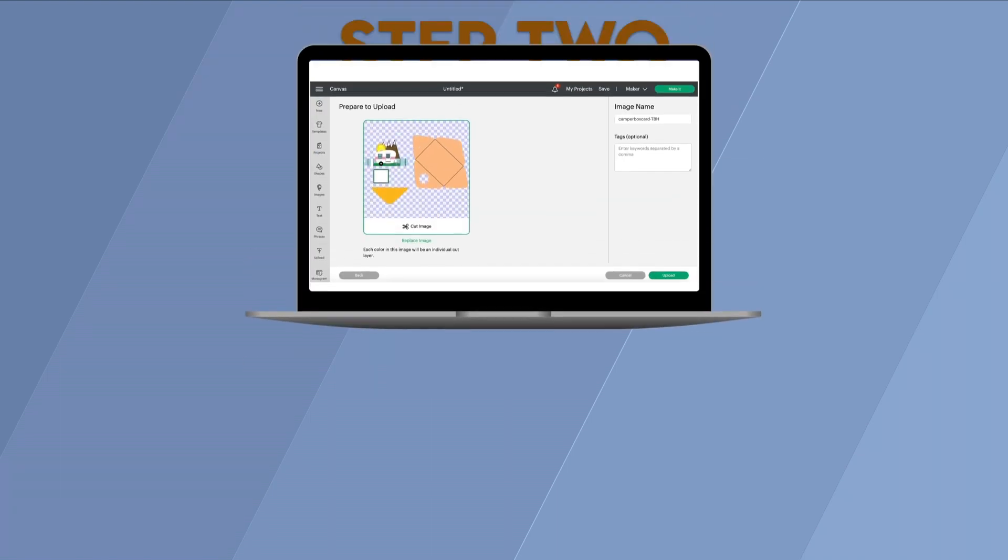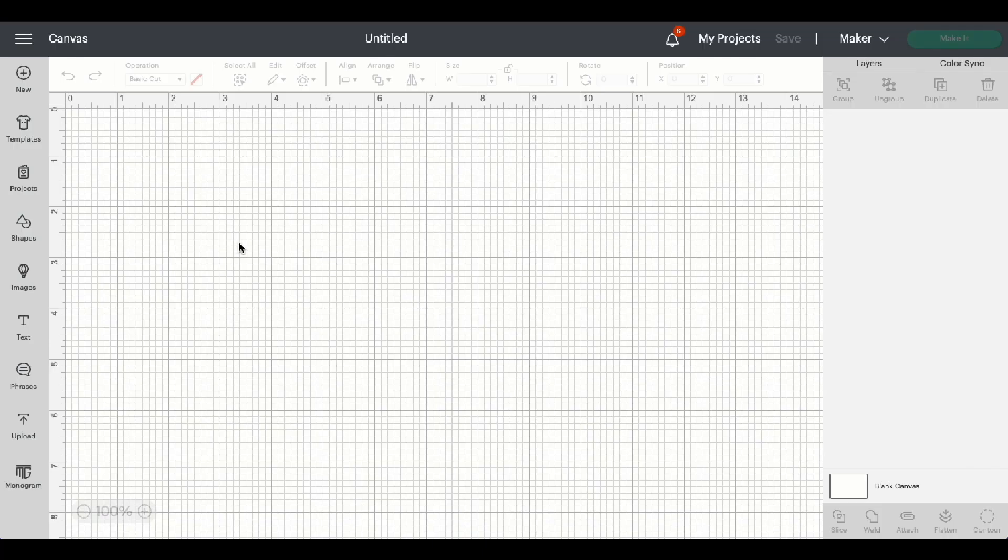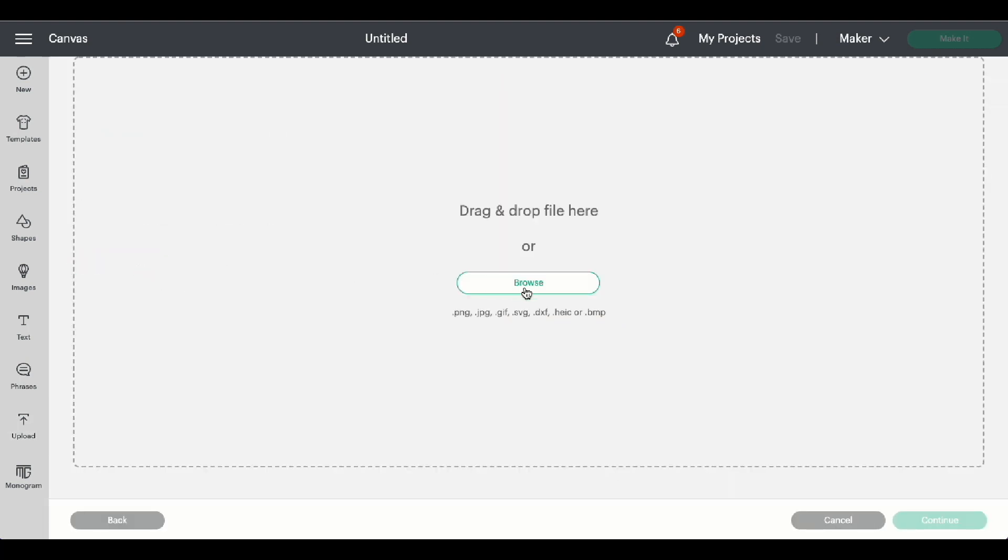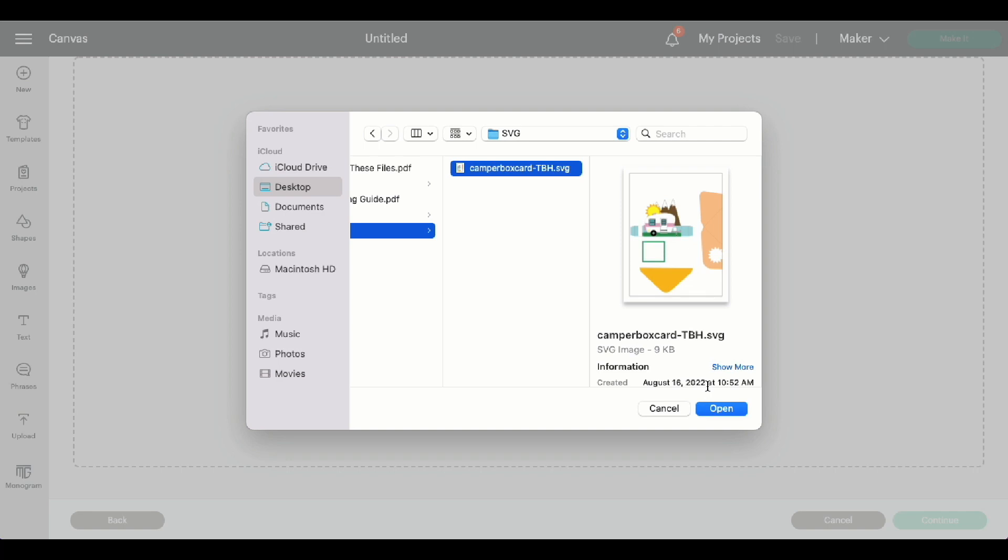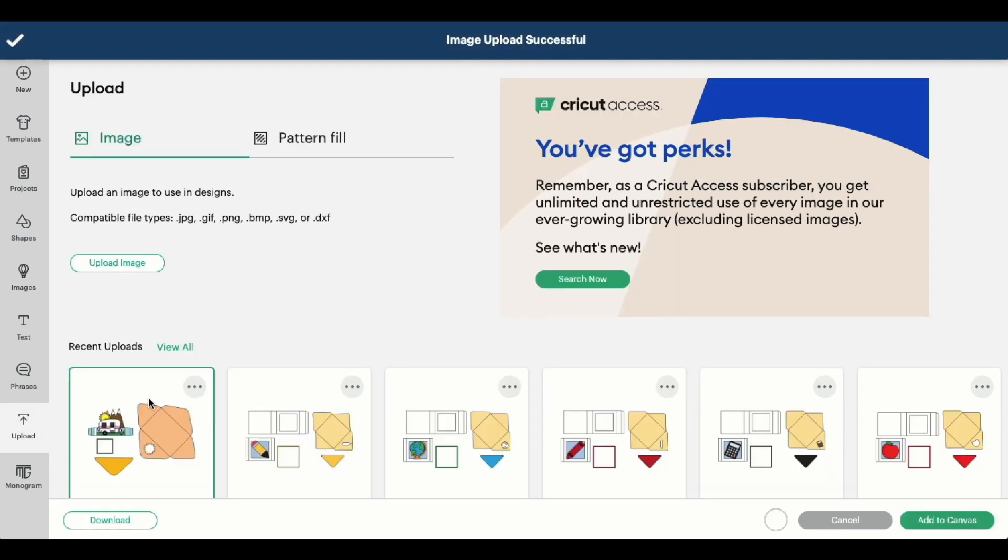Step 2. Upload the design to Cricut Design Space. Now that we're in a new project in Cricut Design Space, we can head to Upload, Upload Image, and Browse. Find where we downloaded the file onto the computer, and then click Open, and Upload. Highlight the image, and click Add to Canvas.